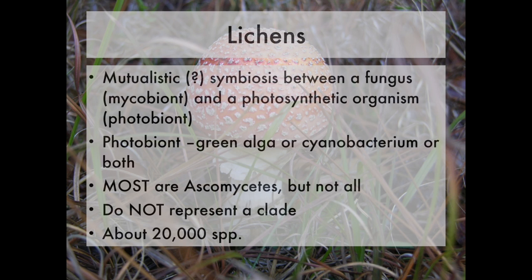What determines the shape of a lichen — which enables us to identify it as a particular species — has to do with the growth of the fungus. Those 20,000 species are 20,000 species of fungi, whereas the number of green algae and cyanobacteria involved is a lot fewer. I recall reading at some point that it was maybe about six different species of green algae found in lichens — I'm not entirely sure of that number, but it's a very small number compared to the fungi involved.